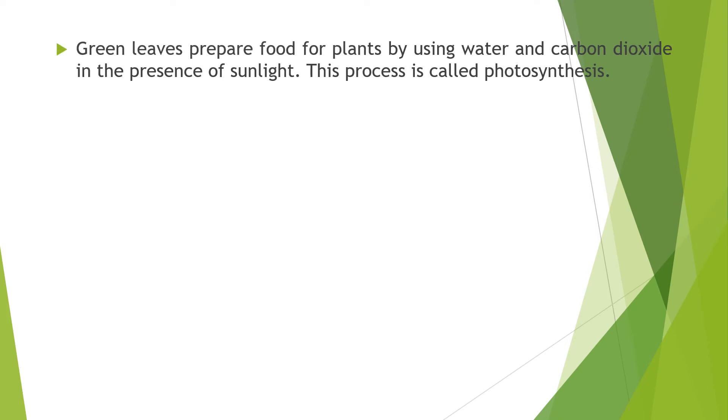Green leaves prepare food for plants by using water and carbon dioxide in the presence of sunlight. This process is called photosynthesis as you all know. When the leaves make food they also give out oxygen. All living things need oxygen to live. So plants are very important for us to live.